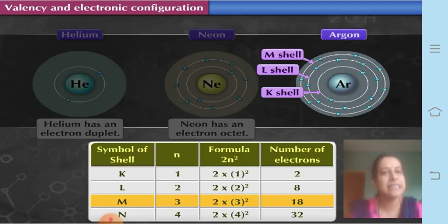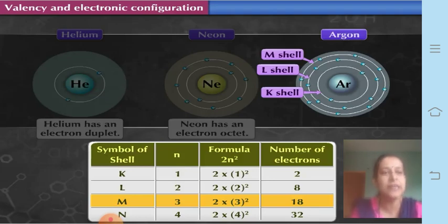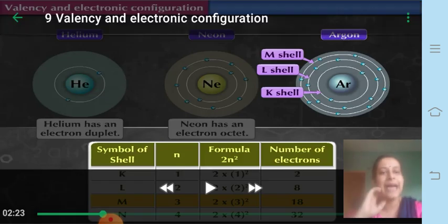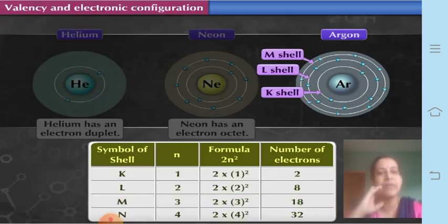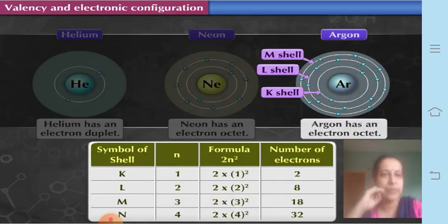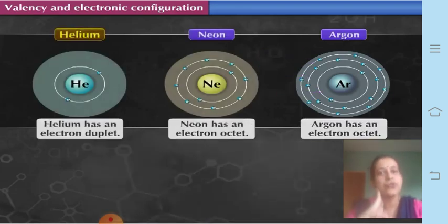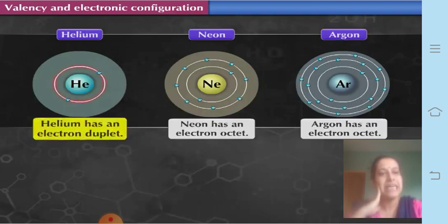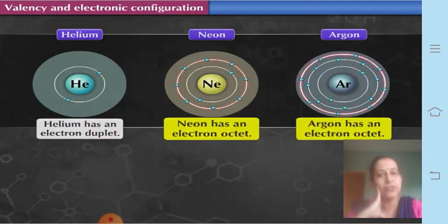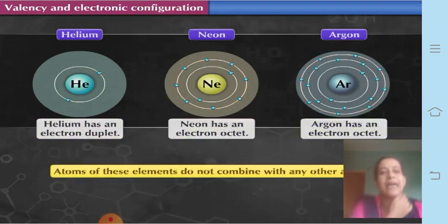In argon's case, the M shell, though it has higher capacity, has an octet, so we say it has a completely filled orbit. All three atoms — helium, neon, and argon — have completely filled orbits. Helium has a duplet and neon and argon both have an electron octet. So helium, neon, and argon are all called inert gases.